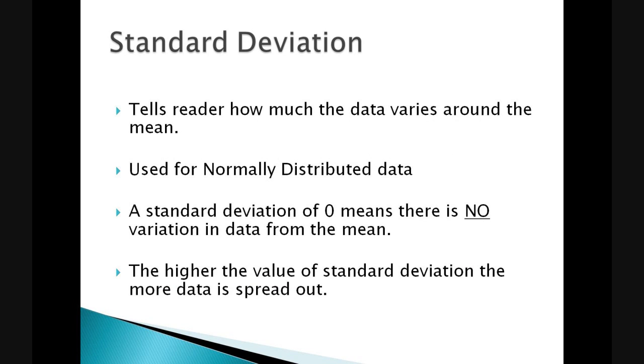Standard deviation is used for normally distributed data, i.e. data with a bell shaped curve. It tells the reader how much the data varies in accordance to the mean. A standard deviation of zero means that there is no variation whatsoever in the data in relation to the mean. The higher the value of the standard deviation, the more the data is spread out.